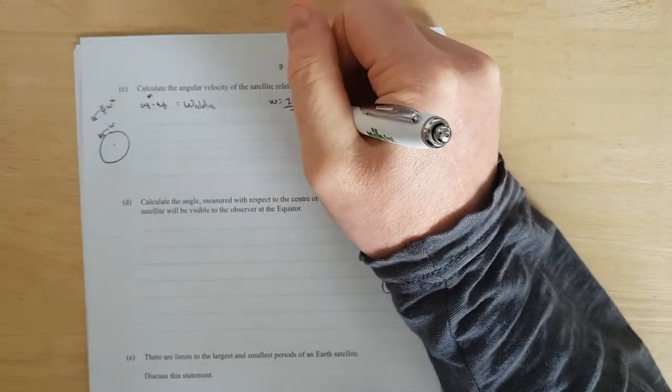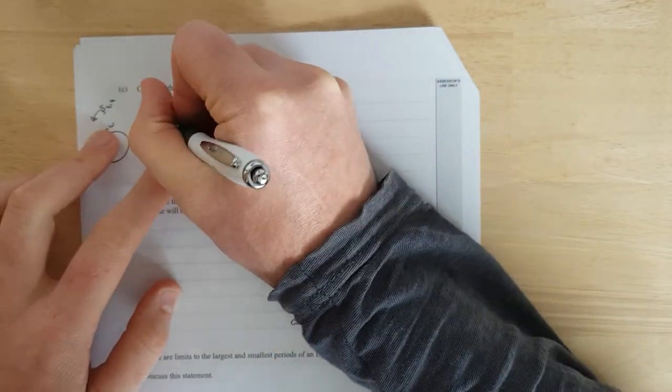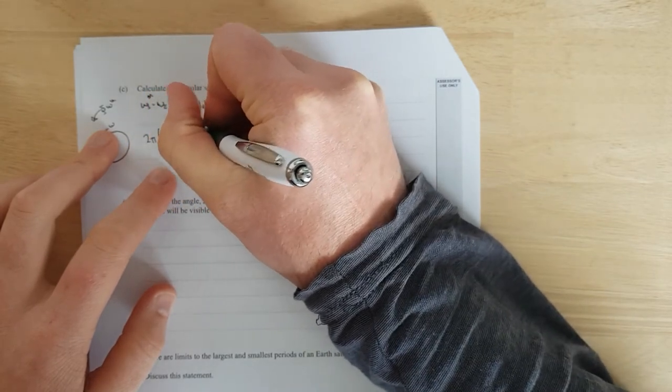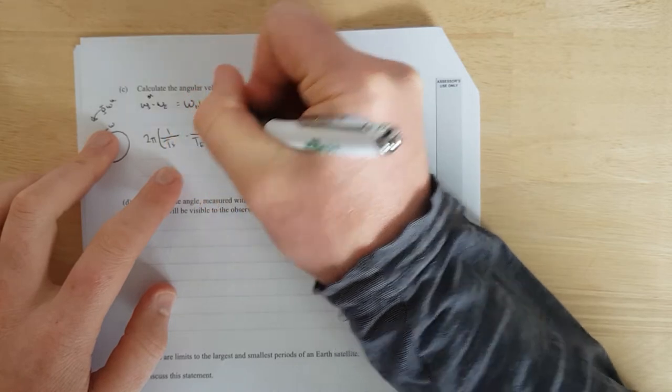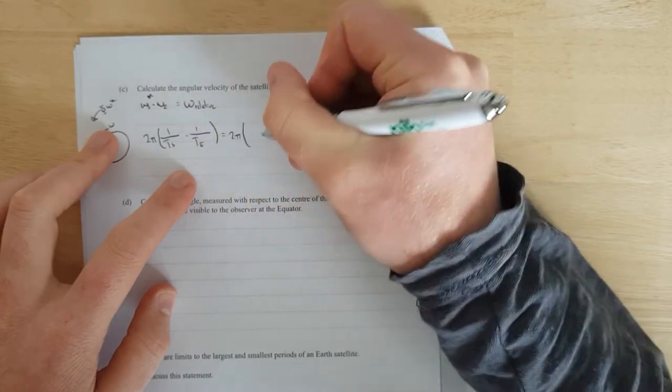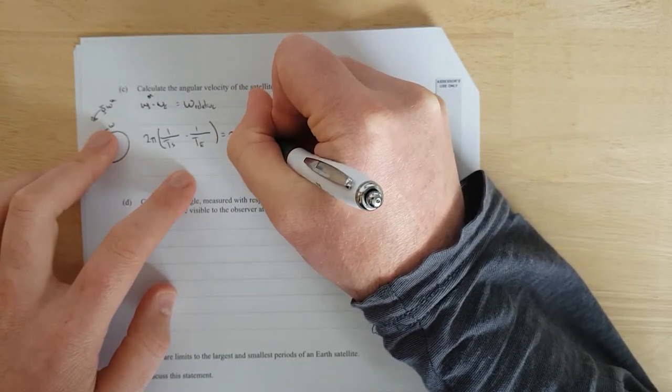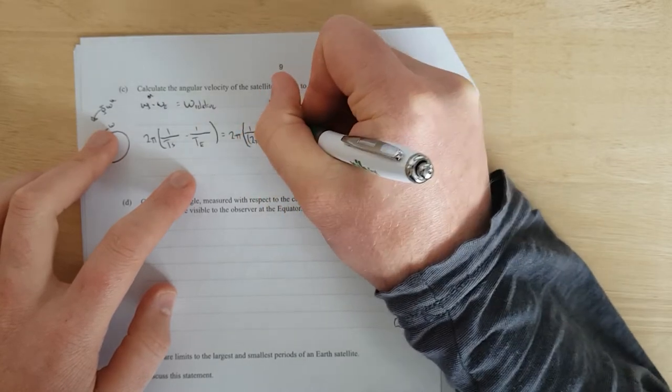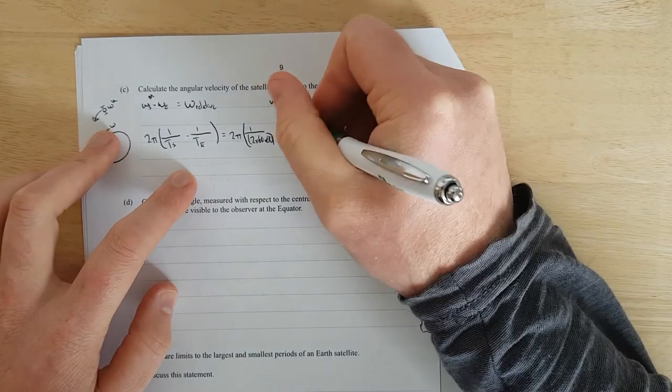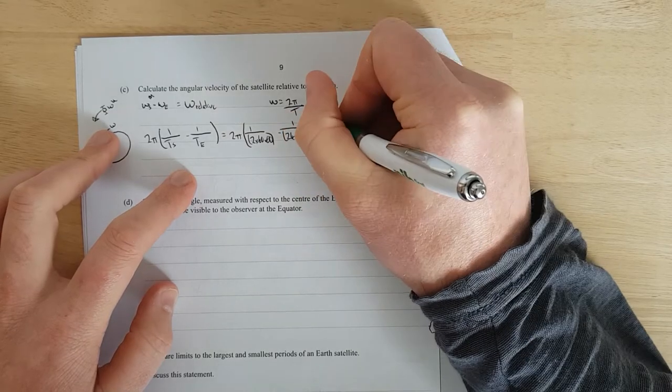In other words, we have, I'm going to pull the 2π out of both of these. So I'm going to have 2π, just because it's easy for calculations, 1 over the period of the satellite, minus 1 over the period of the Earth. And that is going to be equal to 2π, what have we got? 1 over 2 hours, it was over the page, 2 × 60 × 60, minus the period of the Earth, spins around in a day. So we've got 24 × 60 × 60. There we go.